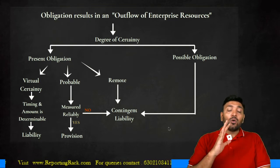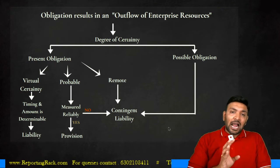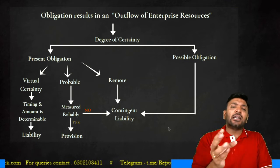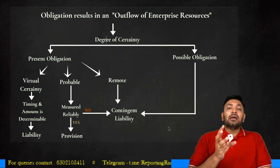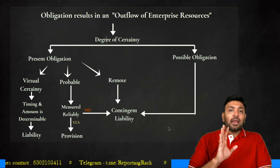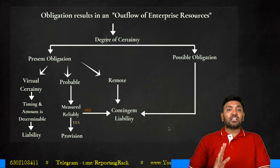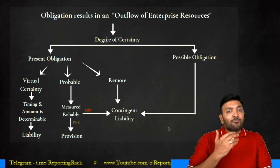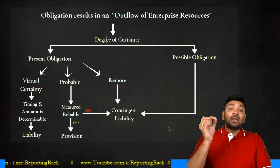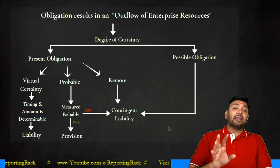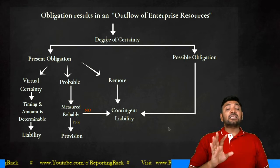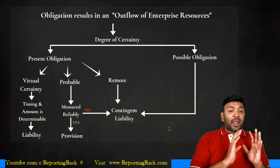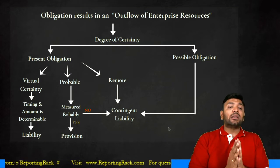A present obligation means I know I have to pay. Within a present obligation, the outflow might be virtually certain. For example, an employee has rendered service during the month of March — I've already utilized that employee's service, so it is virtually certain that I have to pay the salary. If the amount and timing are determinable, it is virtually certain and I will recognize a liability.